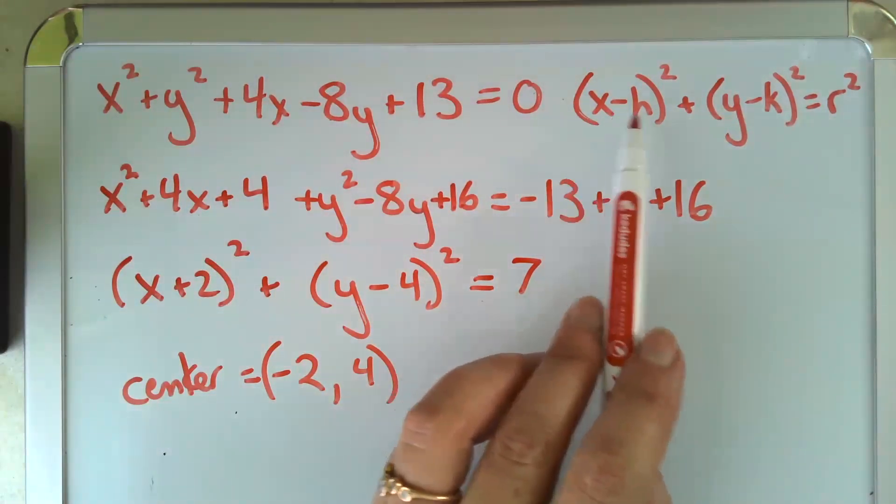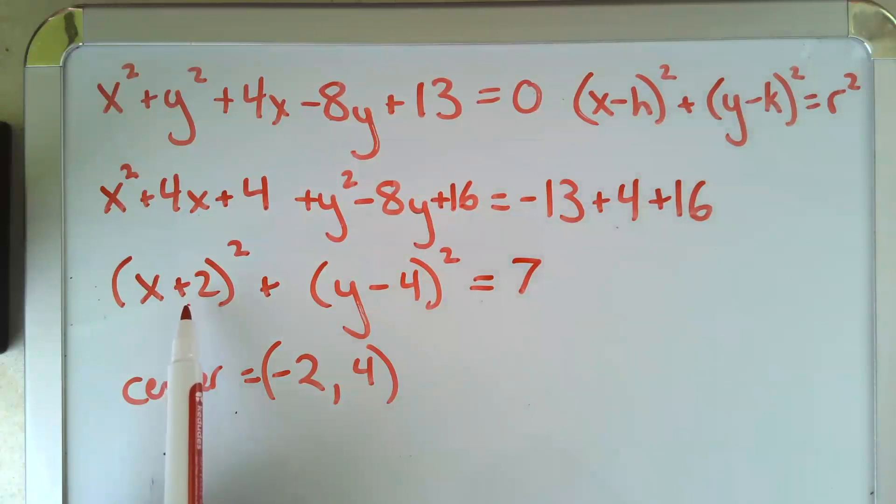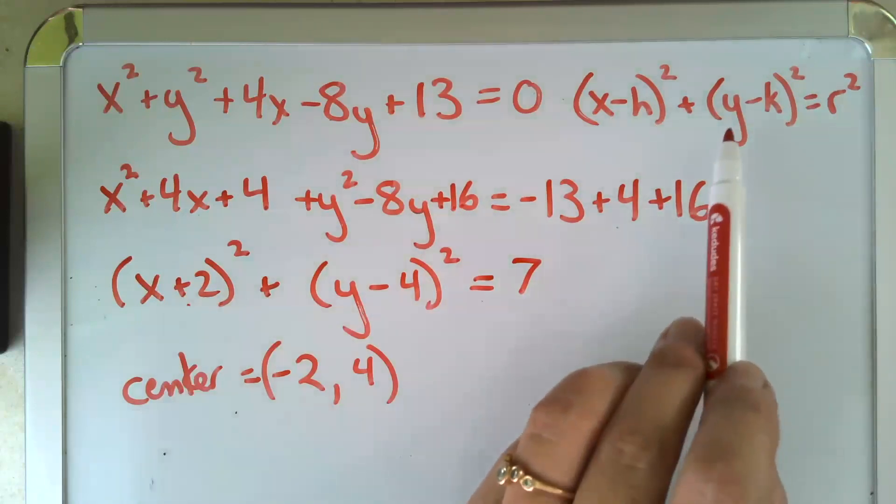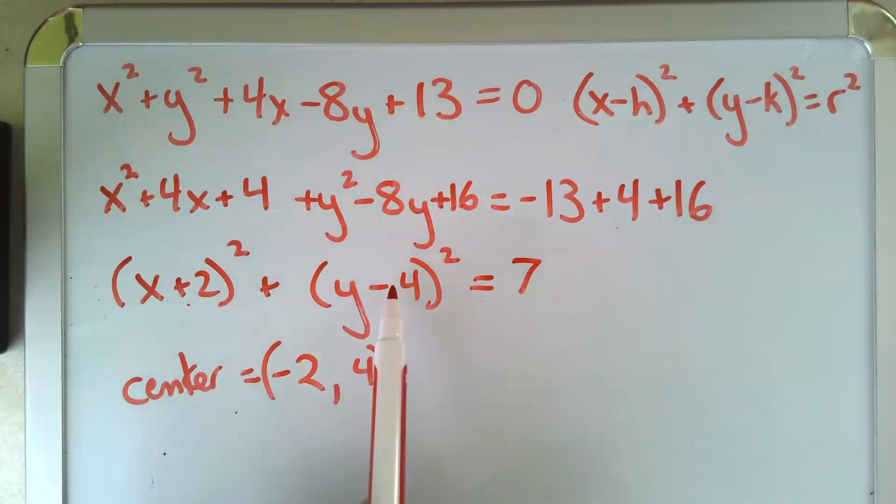then x minus minus h is what gets us our x plus h. And then same thing, y minus k, y minus 4, 4 is our k.